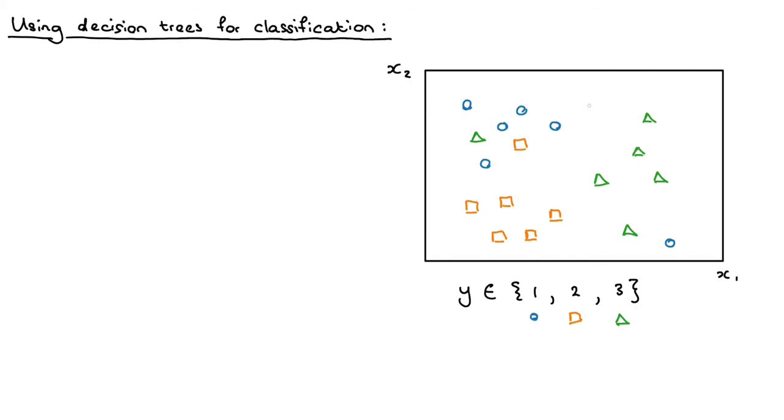And let's say that this tree has separated out the input feature space into four regions like this. So we've got one decision boundary running here, maybe another one running here, and then the last one running here. So the decision tree has separated out the input feature space into four regions.